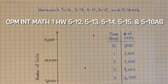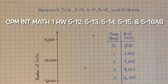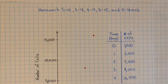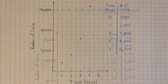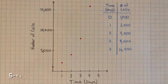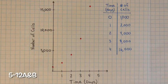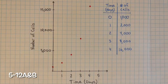This is the homework for 512, 513, 514, 515, and 516 A and B. For problem 512, we need to first determine: should the graph of this situation be linear or curved?